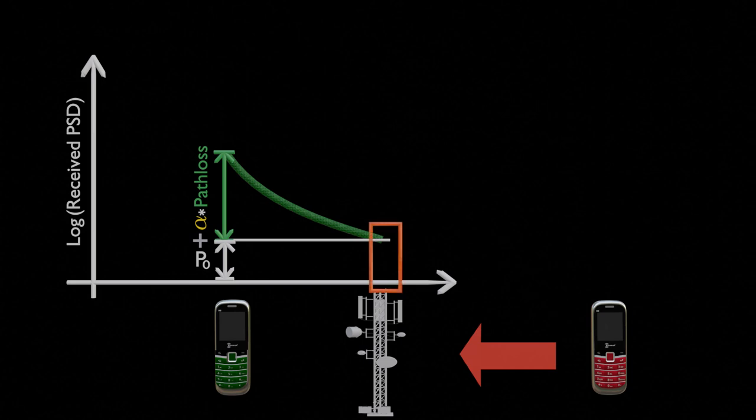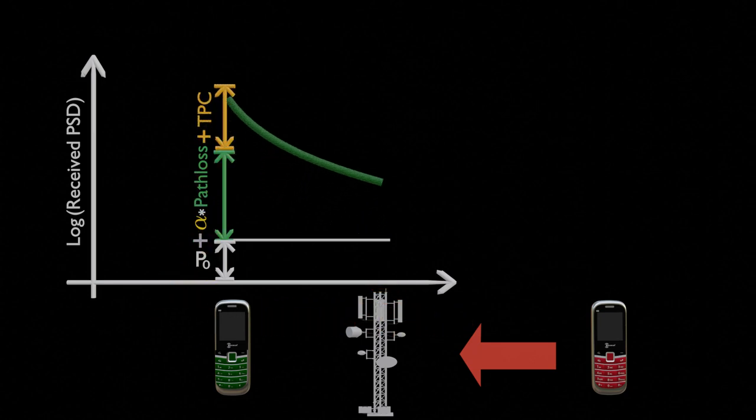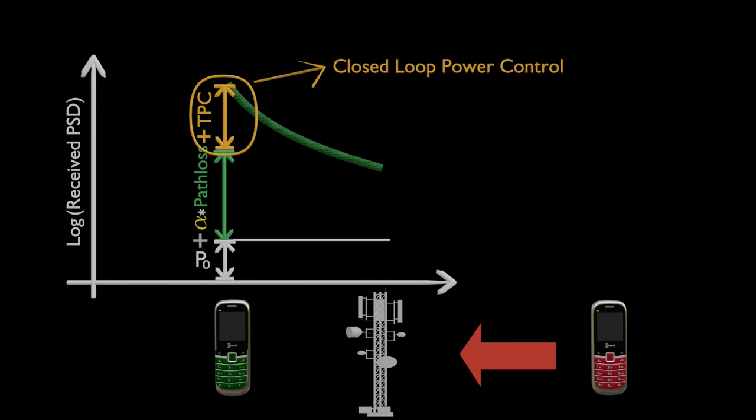So the base station needs to ask the UE to increase its power by sending a TPC command. This TPC command can also be used to decrease power if the interference levels drop later on. When the base station sends a TPC command to adjust a UE's transmit power, it's called closed-loop power control.